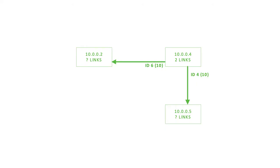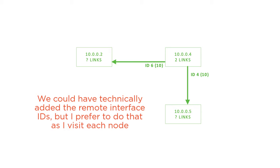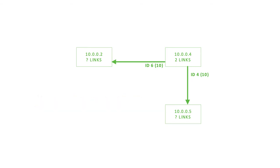Now that we've seen the text output, let's draw that graphically. We know about R4, which has router ID 10.0.0.4, and we saw two point-to-point links connecting to R2 and R5. I like to make my OSPF graphs generally look like the network diagram — that makes it easier to draw and read. We identify the interface IDs on those connections: R4's local interface ID was 6 connected to R2, and local interface ID 4 connected to R5, both with costs of 10 shown in parentheses. At this point we could continue to either R2 or R5, but I'm going to continue to R5 next.